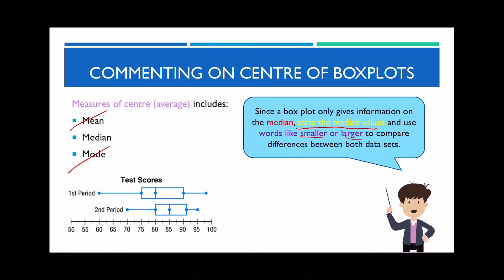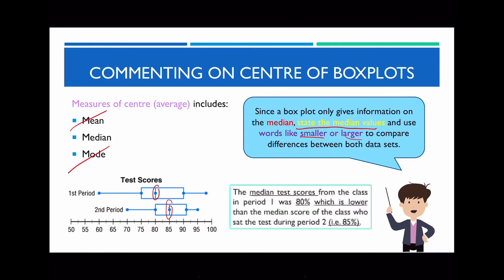For example, looking at the test score example, the median for the first class and second class — the way I would answer this is: 'The median test score for class in period one was 80%, which is lower than the median score of the class who sat the test during the second period.' Notice I've provided the numbers — the median for both box plots — but also used words such as 'lower than' to indicate I'm describing the differences between these two sets of data.